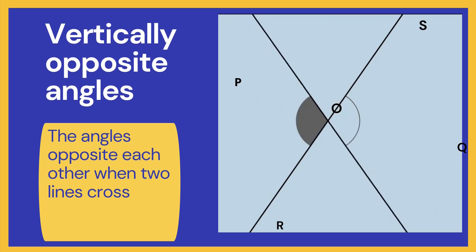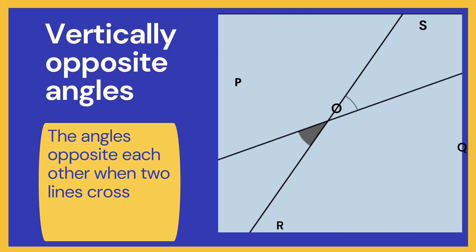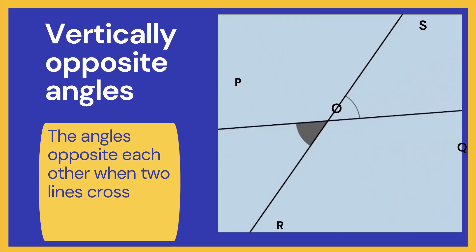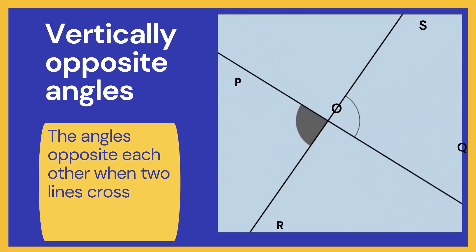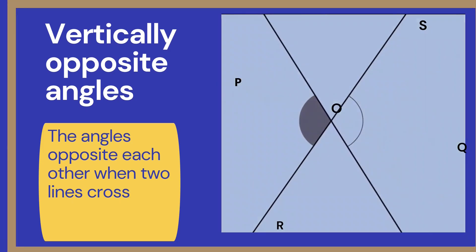Now, even if I change the angles, the vertically opposite angles will always be equal.